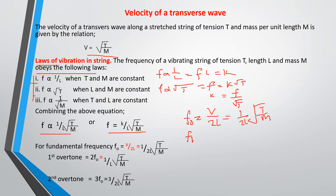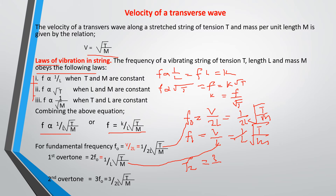For the first overtone, f₁ equals (1/L) × √(T/m). For the second overtone, f₂ equals (3/2L) × √(T/m). These are the equations for a stretched string with either constant tension, mass, or length as the case may be.